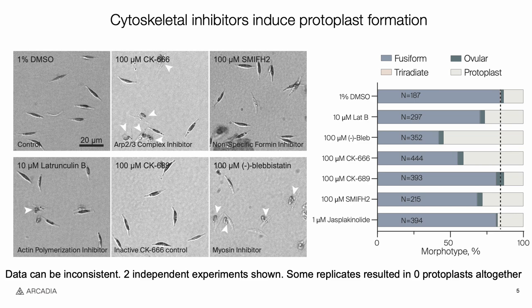To test this, we treated these cells with cytoskeletal inhibitors and measured the percent of cells in each morphotype. Surprisingly, when we treated with the myosin 2 inhibitor blebbistatin or the ARP2-3 complex inhibitor CK666, we saw a drastic increase in the amount of what appear to be protoplasts forming. Increased protoplasts were also observed when treated with the actin polymerization inhibitor latrunculin B or the formin inhibitor SMIFH2, but less frequently.